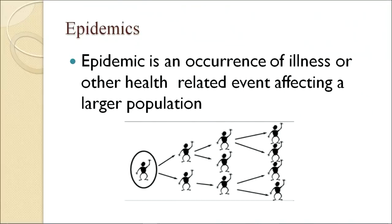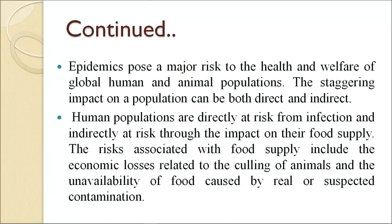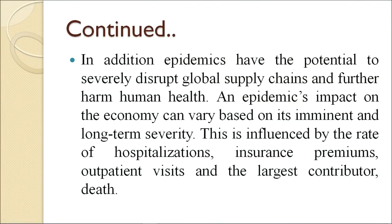An epidemic is an occurrence of illness or other health-related events affecting a larger population. Epidemics pose a major risk to the health and welfare of global human and animal populations. The impact on a population can be both direct and indirect. Human populations are directly at risk from infection and indirectly at risk through the impact on their food supply. Risks associated with food supply include economic losses related to the culling of animals and the unavailability of food caused by real or suspected contamination. Epidemics also have the potential to severely disrupt global supply chains.